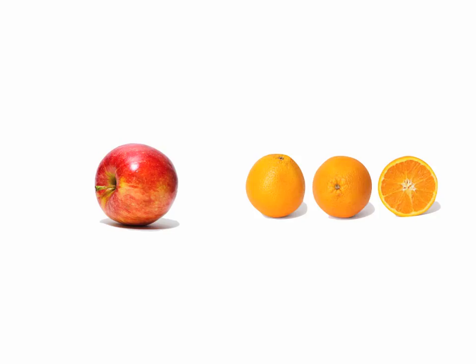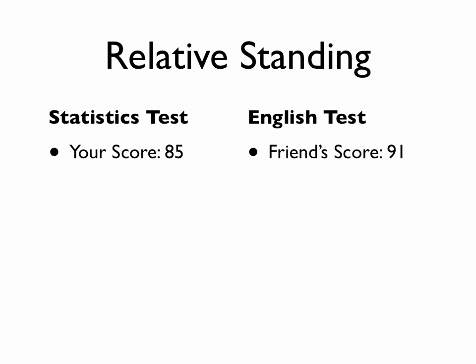Relative standing refers to how an individual's score relative to the distribution of scores compares with others. Let me explain with an example. Let's say you just scored 85 on a statistics test and your friend scored 91 on an English test — both scores out of 100 points.